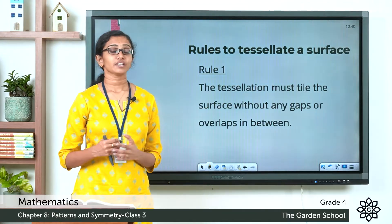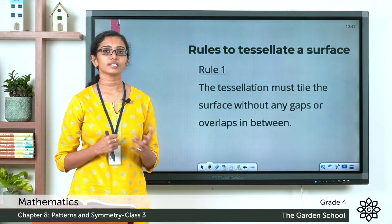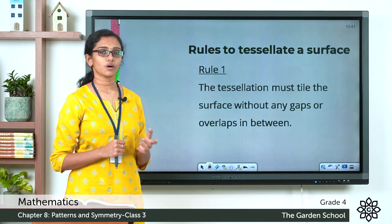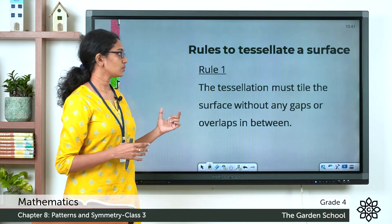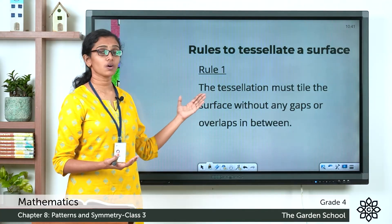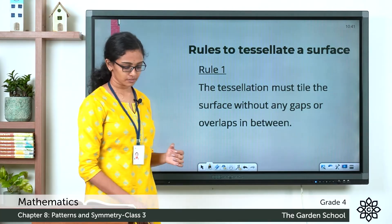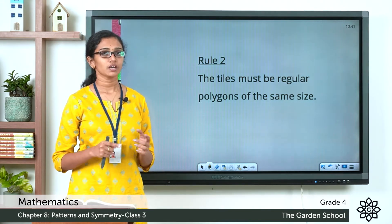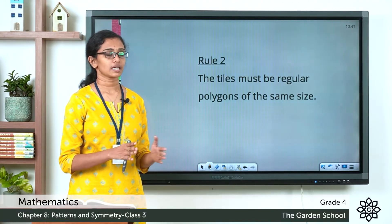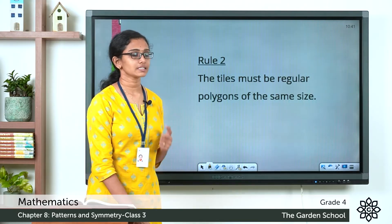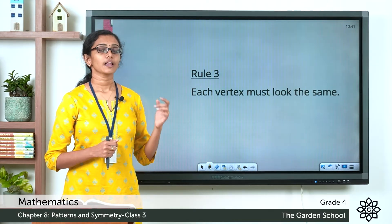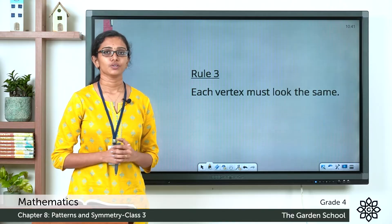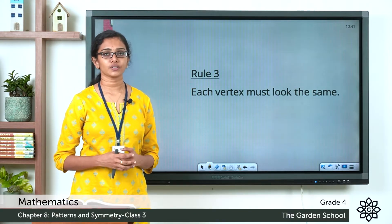When creating tessellations or tiling patterns, we have to take care of a few things. Rule number one: the tessellation must tile or cover the surface without any gaps or overlaps in between. Rule number two: the tiles must be regular polygons of the same size — all shapes should be regular polygons of equal size. Rule number three: each vertex must look the same — the tessellation should look the same at each vertex.